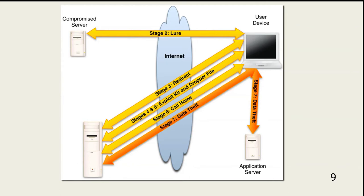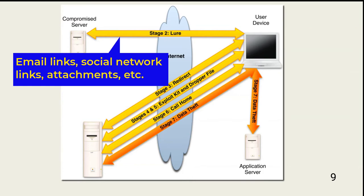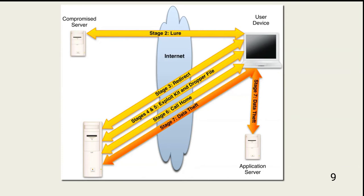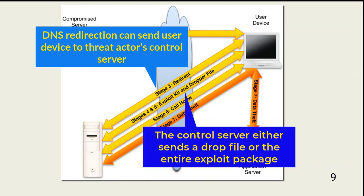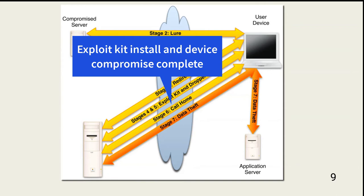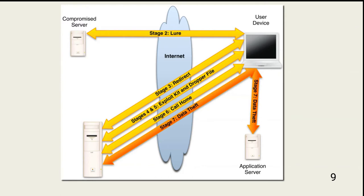After the threat actor creates her exploit kit, she uses one or more lures to get users to deliver her payload. Lures include email links, Microsoft Office macros included in attachments, links on social networking sites, and DNS redirection to malicious servers. In many attacks, a user clicking on a link or opening an infected file causes a drop file to be downloaded and installed. The drop file then calls home to a malicious server and downloads the rest of the attack package, covering the delivery and installation links.